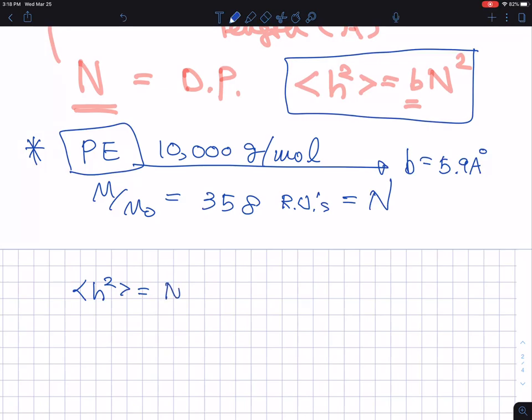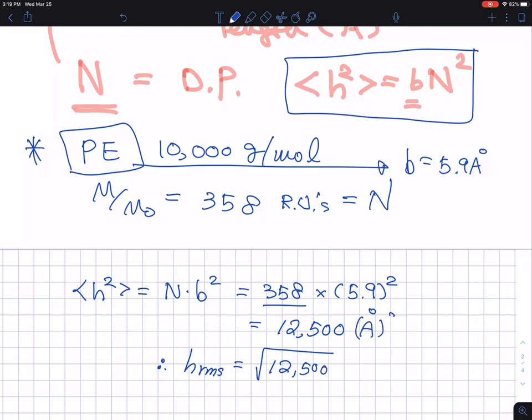So then, we are in business now. So I want to know my h square value, which is b times, b square times N. Or let me do it the other way. Usually, we put it N times b square. That's to be consistent. So now, this is a 358 repeating units, right? And then, 5.9 to the square. And so now, let me do the numbers. So if I do 358 times 5.9, 5.9. And that will lead me 12,000, let's say 500 angstroms. And this seemingly, they're very similar to the value that we just talked about before. So then, I can say that h_rms is just a square root of 12,500. Actually, the unit is square. So now, this is a 112 angstroms and 11.2 nanometers.